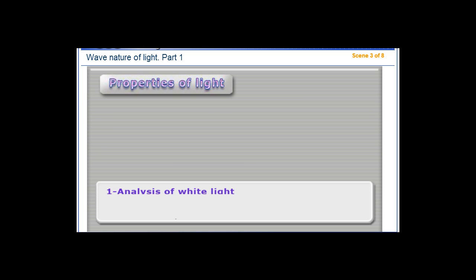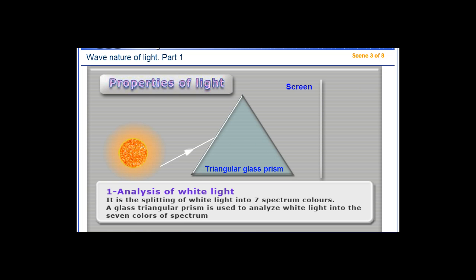Properties of Light. Analysis of White Light: It is the splitting of white light into seven spectrum colors. A glass triangular prism is used to analyze white light into the seven colors of spectrum.